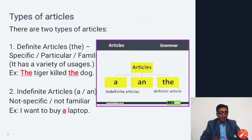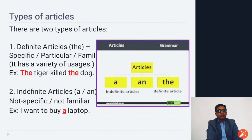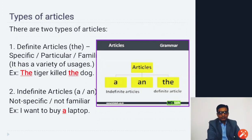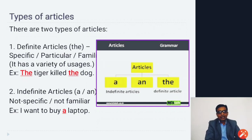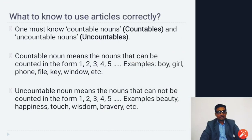The second type is the indefinite article, which includes 'a' and 'an'. These are used for something not specific or familiar. For example: 'I want to buy a laptop.' This means any general laptop, not a specific one. This is how we use 'a' and 'an' in different sentences.